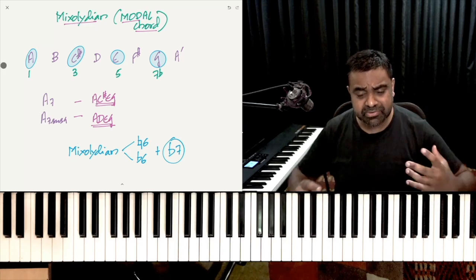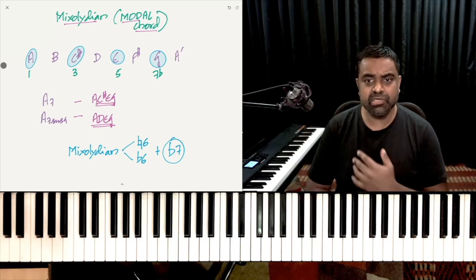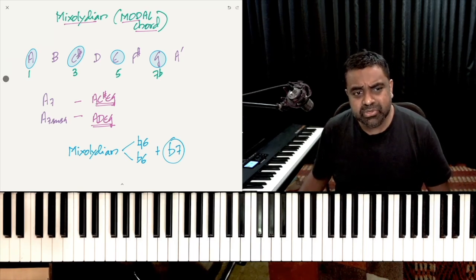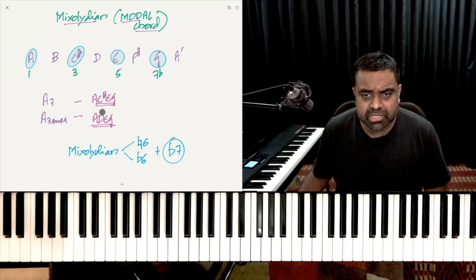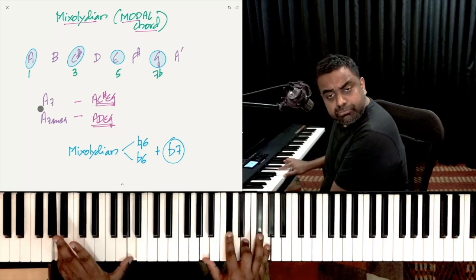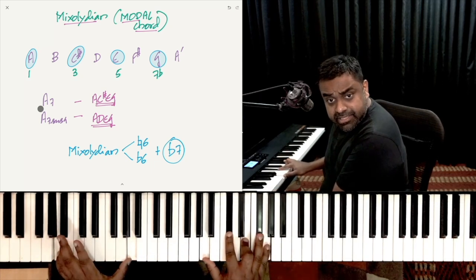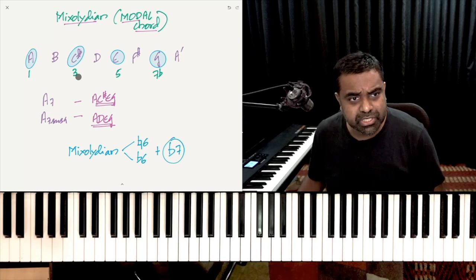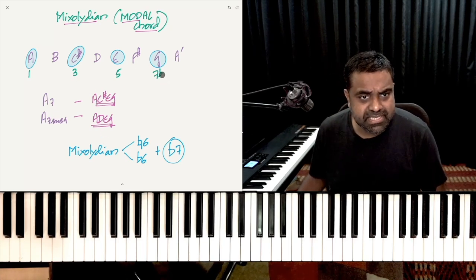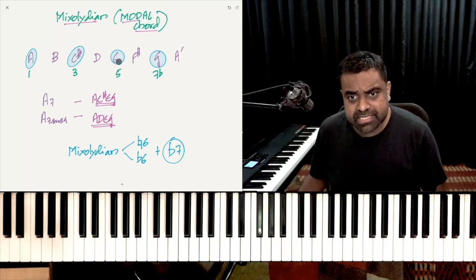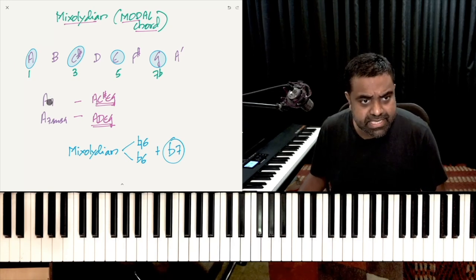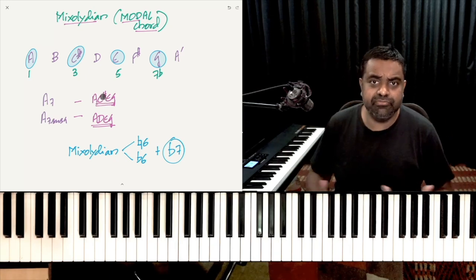What I like about using a modal scenario is that you don't have to really change chords — you can just hold on to the chord. So A7 could just be held, and the entire melody will be built using the notes of this mode. A Mixolydian is just A major with a flattened 7th. If you drone it with just the tonic chord — A dominant 7th — it gives you a very modal flavor.